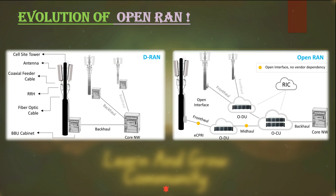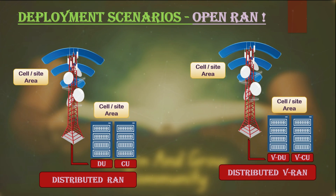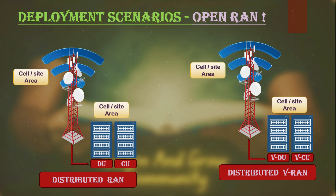Now let's understand how telcos and operators can move forward with the acceptance and deployment of ORAN in their networks. The transition from legacy networks to ORAN is not a one-step process — it needs to happen in stages. Instead of jumping directly to cloud RAN, telcos and operators can prefer to deploy virtualization in the distributed RAN initially. In this scenario, both units — the Centralized Unit and Distributed Unit — are kept at the cell or site area. This approach does not require a huge shift in hardware, but allows customization from the software side.